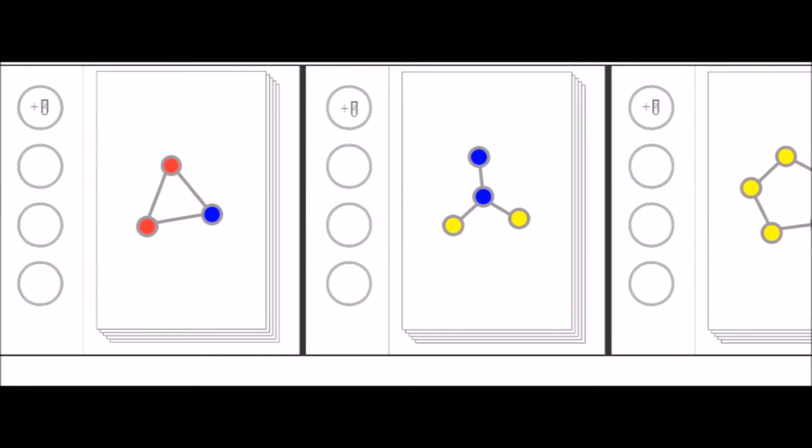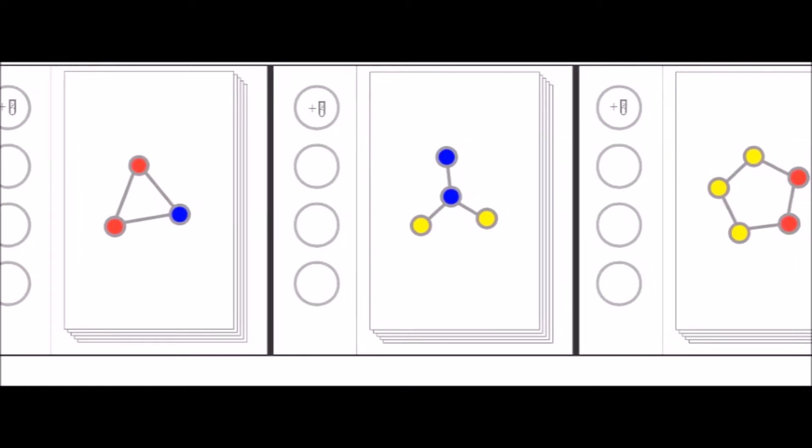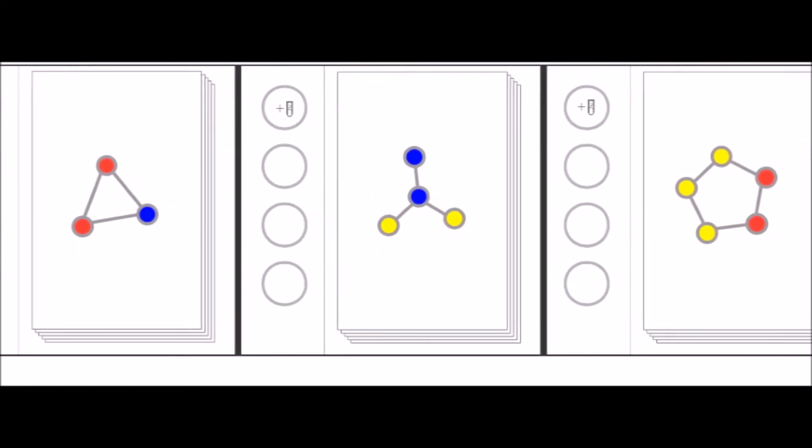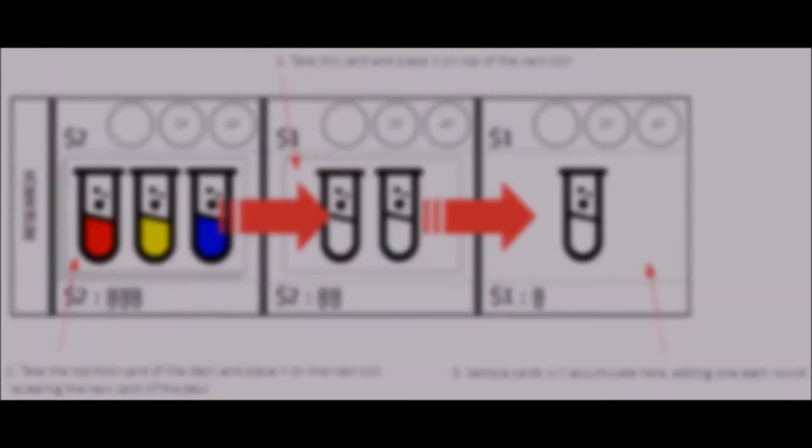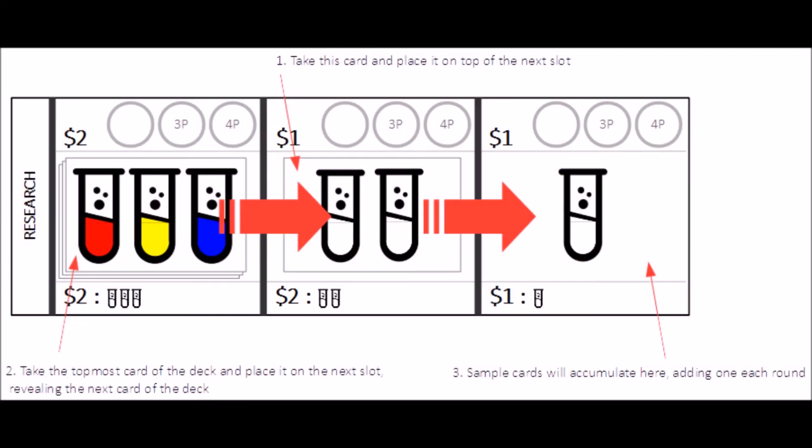There are three colors of samples, and they can be purchased through research for different prices. Each round, a new sample card gets replaced for different selections and combinations of samples.